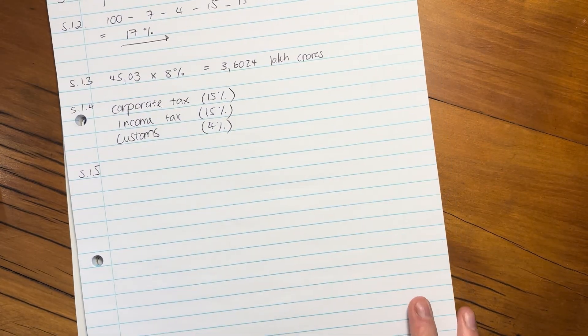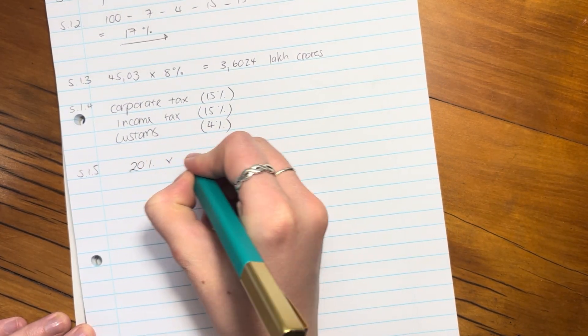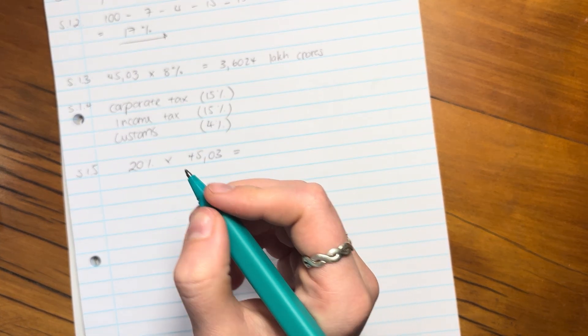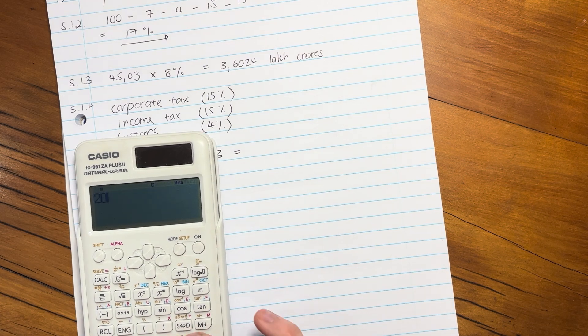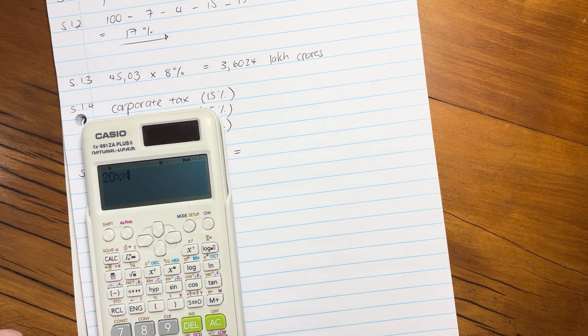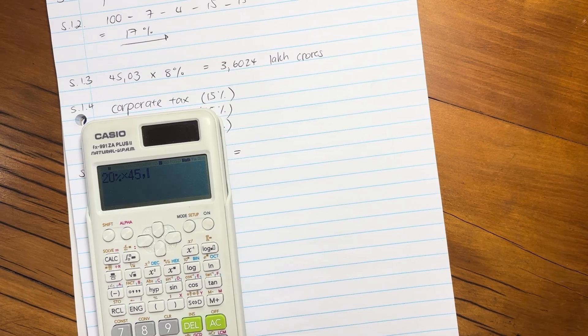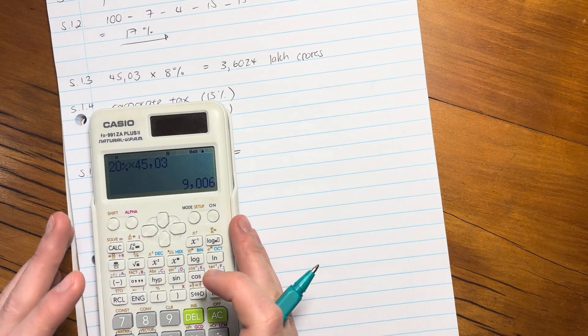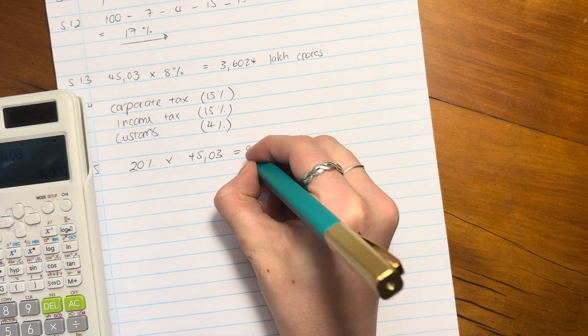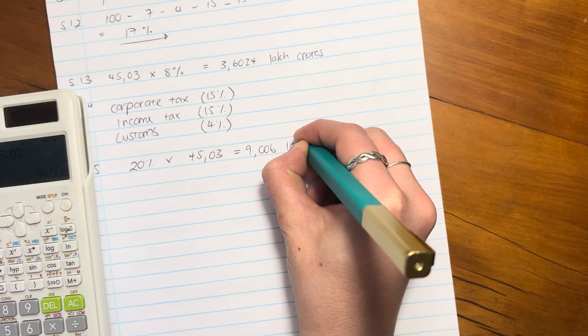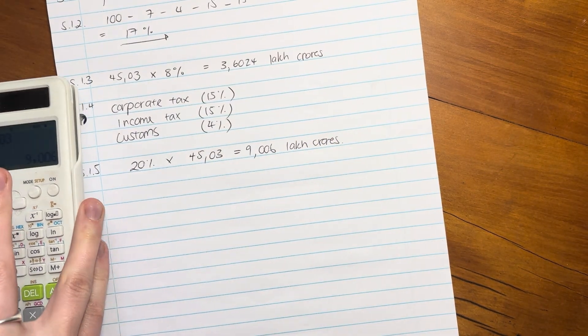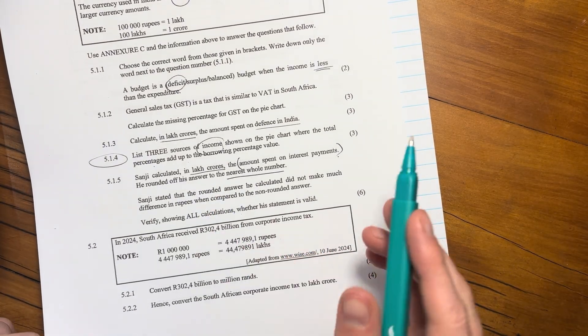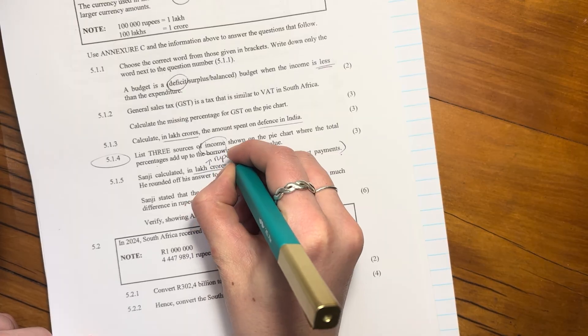So we have to start with that. So let's go over here. It says interest payments is 20%. So 20% of that amount. So let's do that first. So we're going to say start with 20% times by 45.03. That's in lakh crore. So we're going to say 20% times 45.03. So make sure that you type that in correctly. My answer there is 9.006 lakh crores. But we're not done now.